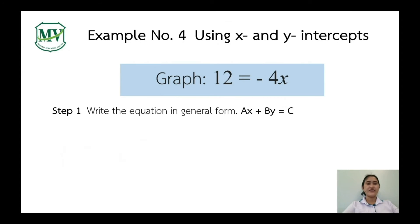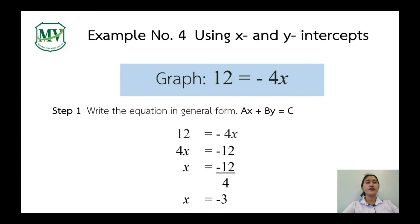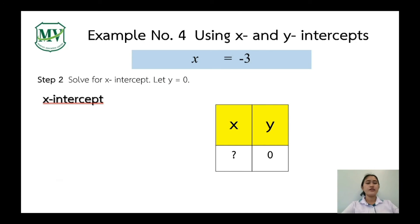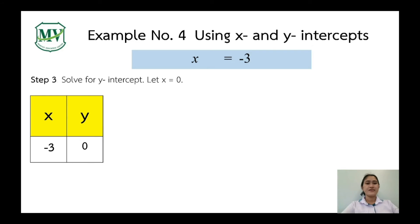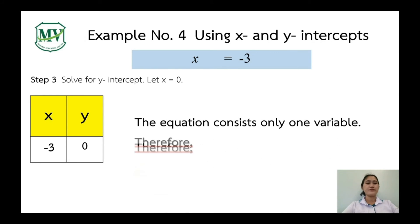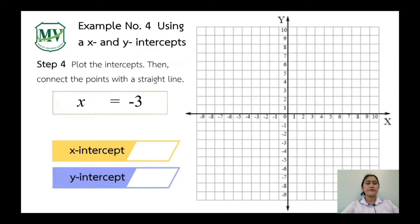Example number 4: let's graph 12 equals negative 4x. Since this is a linear equation with one variable, we simplify: 4x equals negative 12. Dividing both sides by 4, x equals negative 3. Our x-intercept is (negative 3, 0). There is no y-intercept for this problem. We plot the x-intercept and draw a vertical line. This is the line of x equals negative 3.